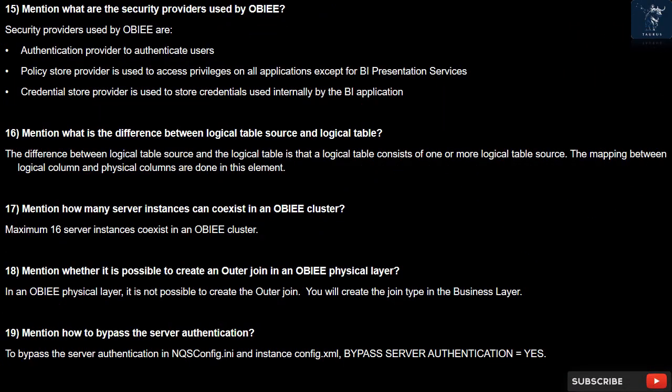Question 15: What are the security providers used by OBIEE? Security providers used by OBIEE are: authentication provider to authenticate users, policy store provider used to access privileges on all applications except BI Presentation Services, and credential store provider used to store credentials used internally by the BI application.